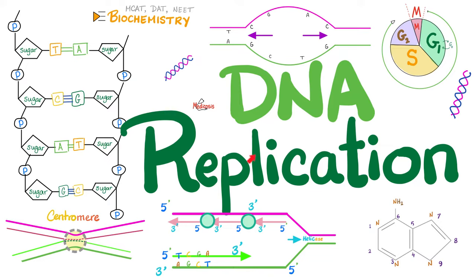Today, it's time to delve into DNA replication — how can we replicate your DNA so that we can replicate your cell, i.e. cell division? DNA replication happens in the S phase of the cell cycle. The actual mitosis, or division of one cell into two cells, happens at the M phase. S for synthesis of DNA, M for mitosis.